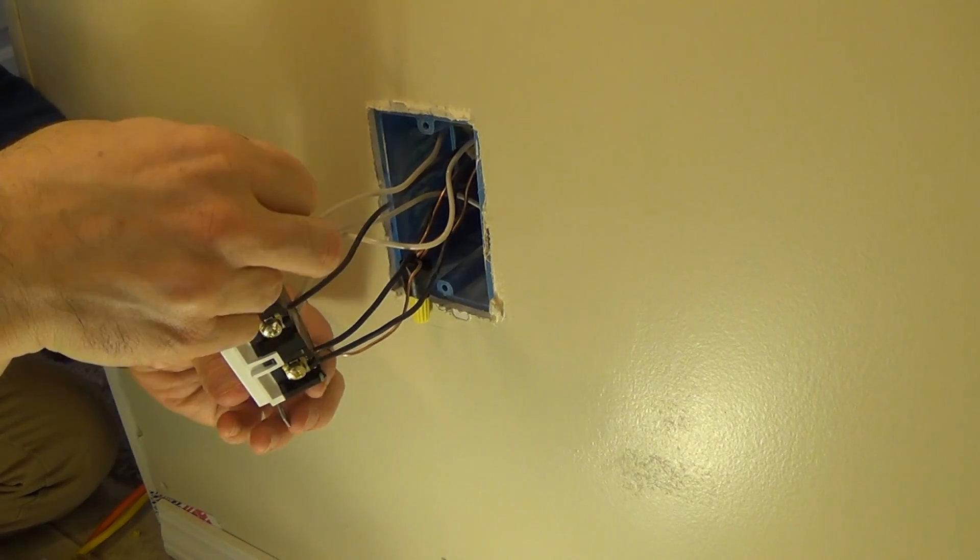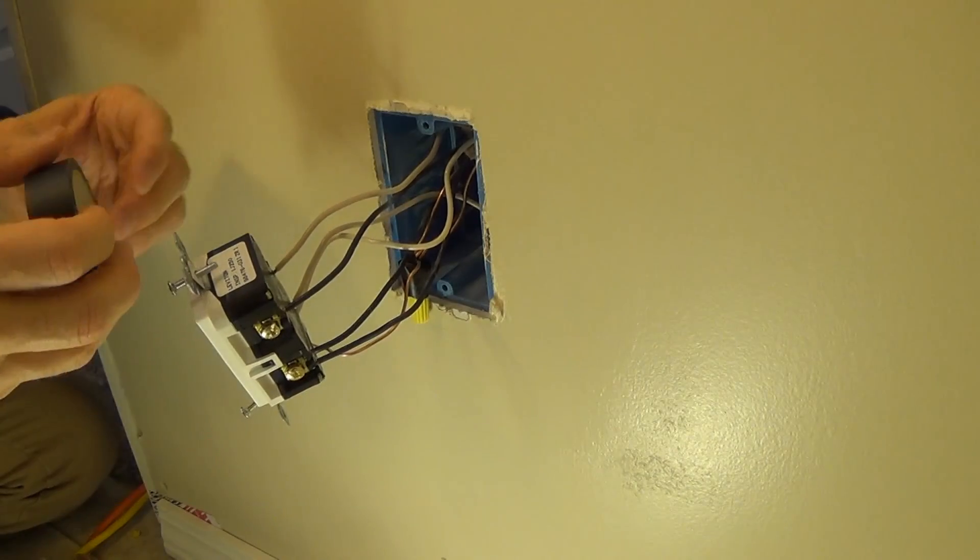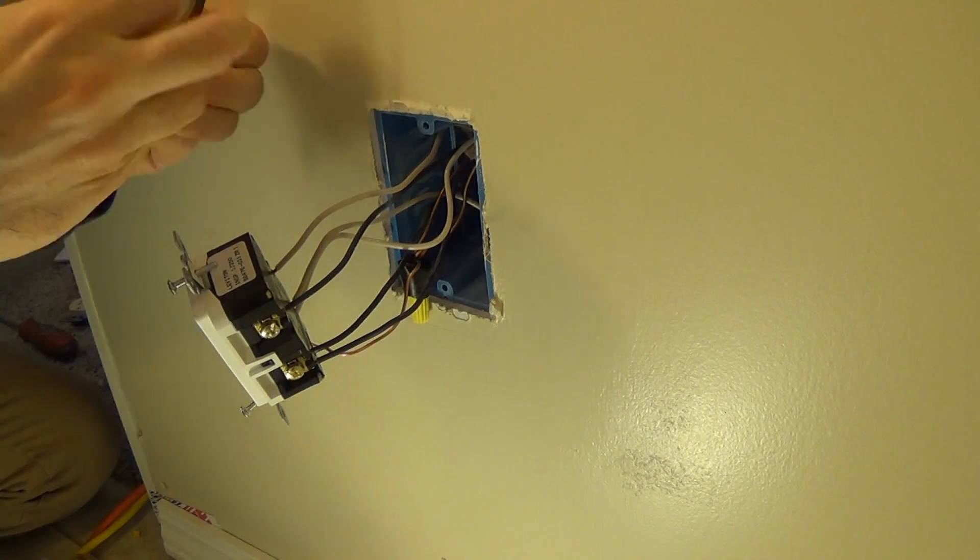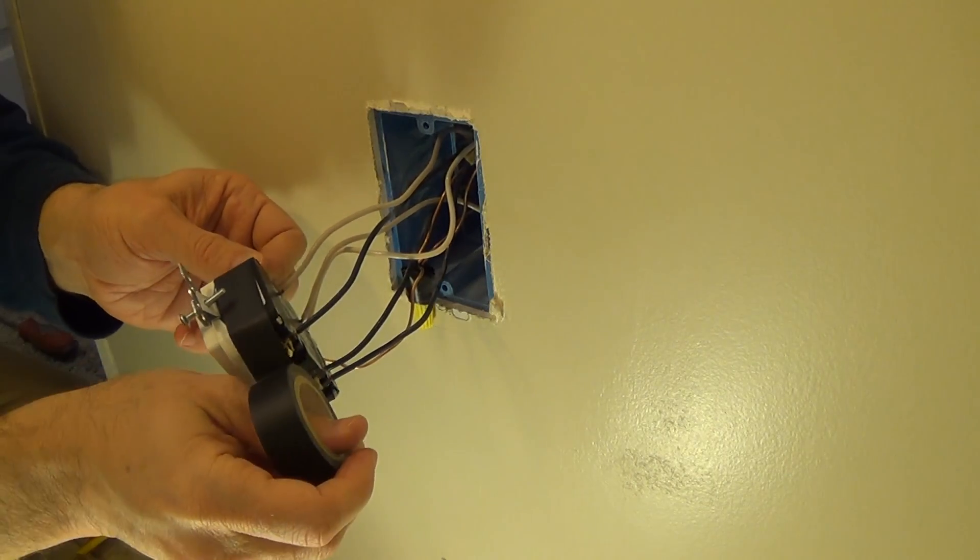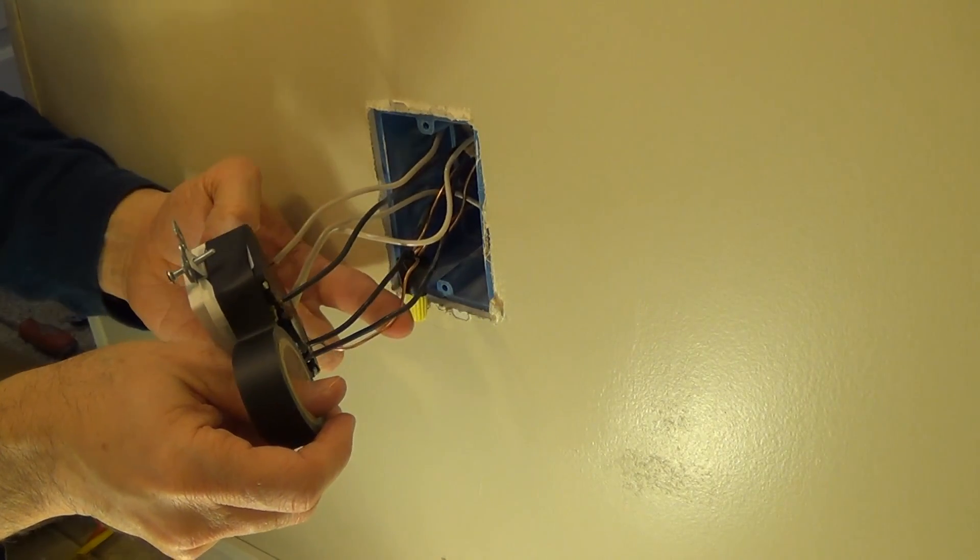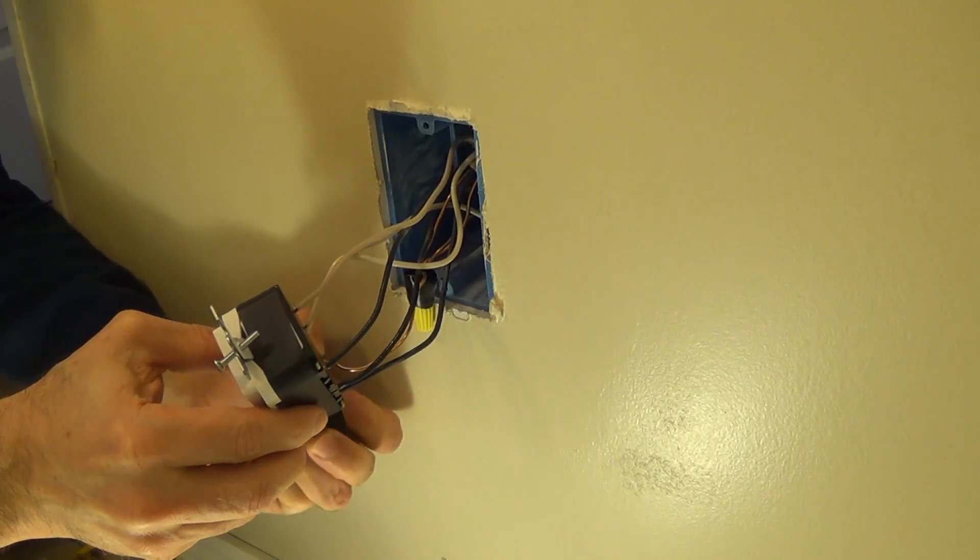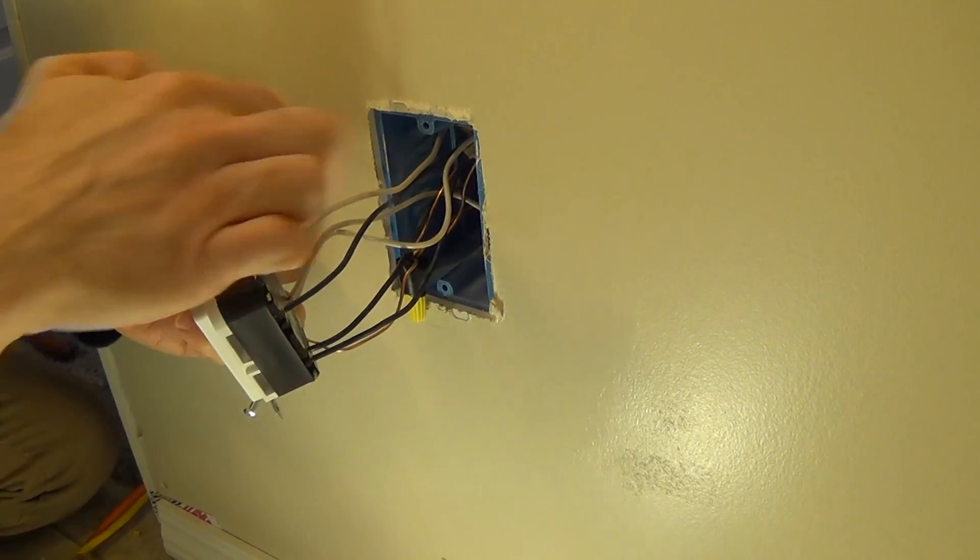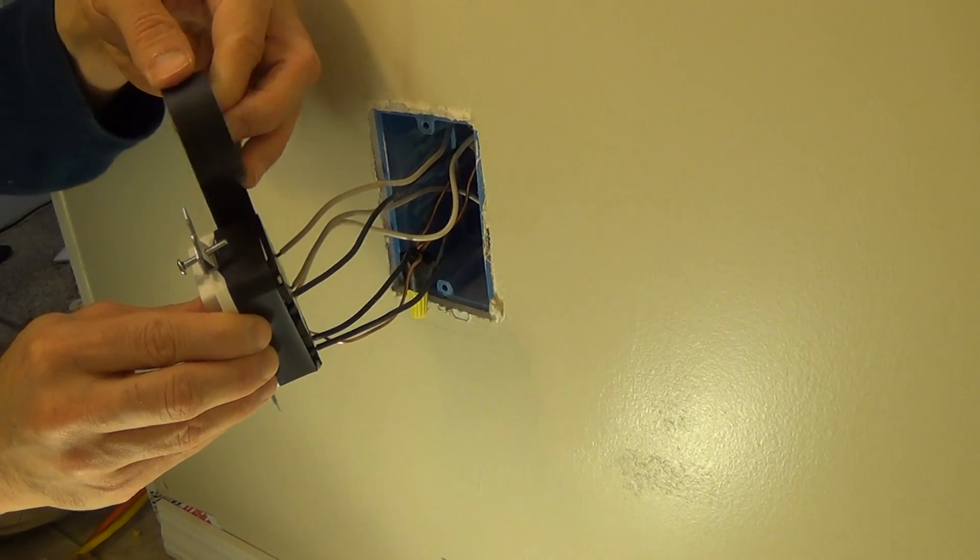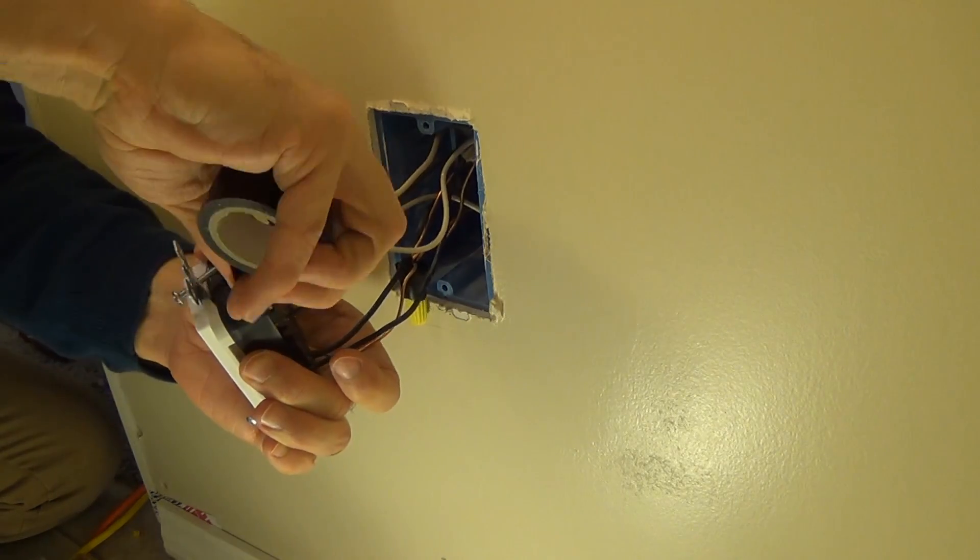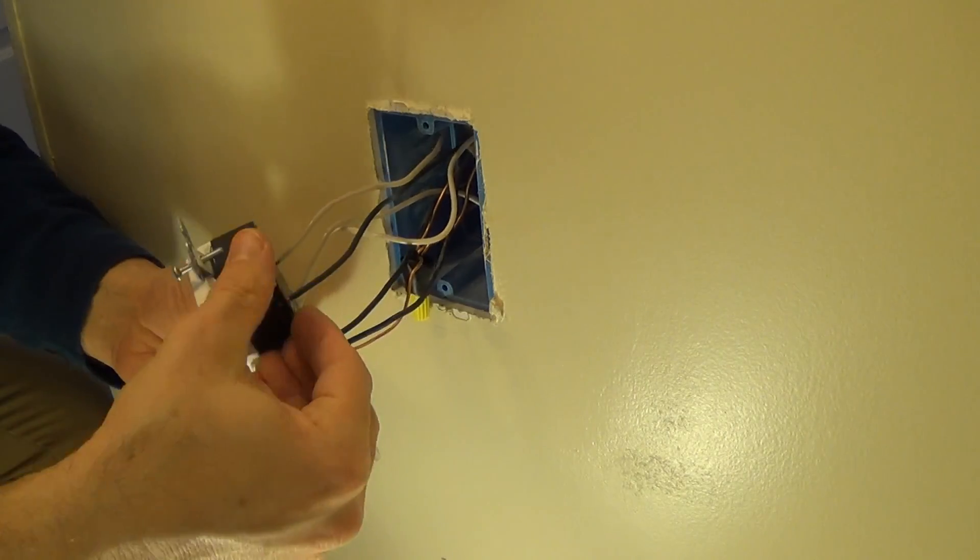So what I like to do at this point is I actually like taking some electrical tape and I actually like to just kind of cover these terminals. One reason: it helps protect these terminals from contact because these grounding wires are exposed and sometimes if you're not careful they could shift and you can move them around and actually touch these terminals, and that's not good. So I always like to stick in some electrical tape to kind of cover those.